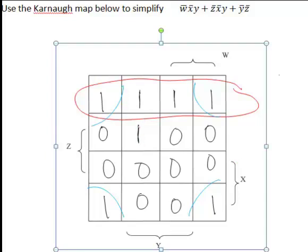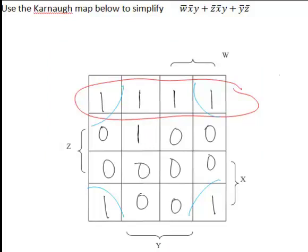Now since this remaining one that we have not yet covered cannot be incorporated into a four square, a two square can be made with it and the one above it here. So now we need to look at how to write this up for our final expression.